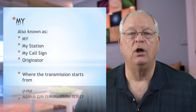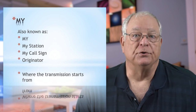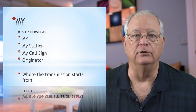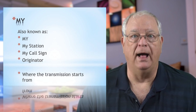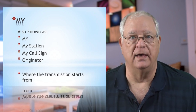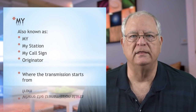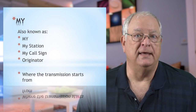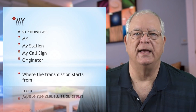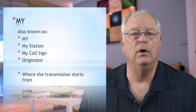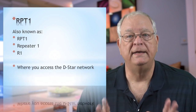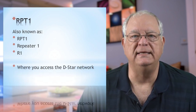The first element is called MY. You'll also see it listed in various menus as MY STATION, MY CALL SIGN, ORIGINATOR, and just MY. This element is your government-issued amateur radio call sign. You'll only need to set this once in most new radios. In the ID31+, you can also set an additional identifier such as a short name or radio model number after a slash.